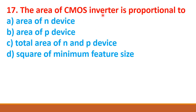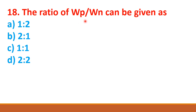The area of CMOS inverter is proportional to — area of NMOS device, area of PMOS device, total area of N and P device, square of minimum feature size. The correct answer is option C: total area of NMOS and PMOS device. The ratio of WP divided by WN for PMOS to NMOS transistor can be given by 1 is to 1.